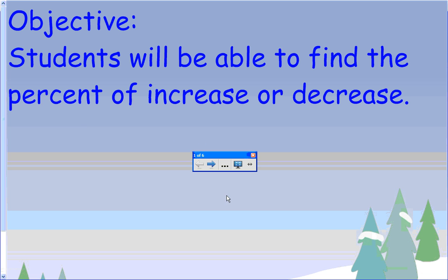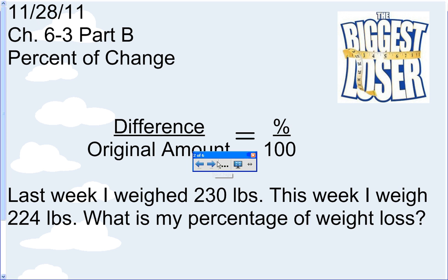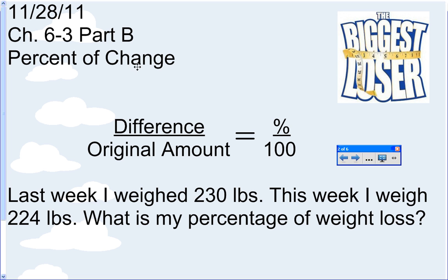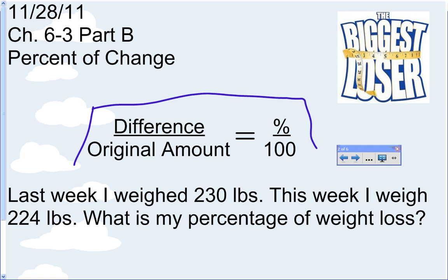The objective for this lesson is that you'll be able to find percent of increase or decrease. These notes are from chapter six, section three part B in our textbook. The formula we're going to be using is: difference over original amount equals percent over 100. This is right in line with all the other proportions we've been working on — is over of, part over whole, and now difference over original amount.